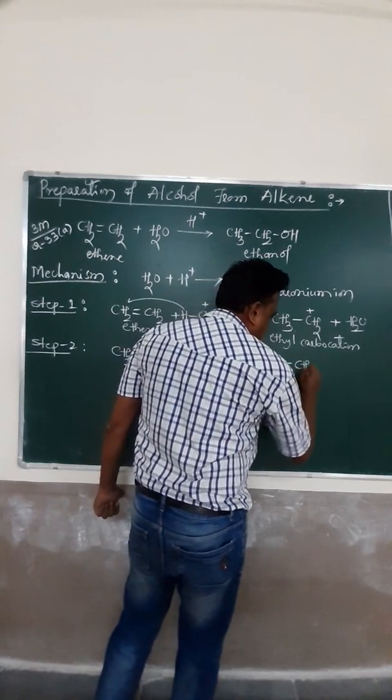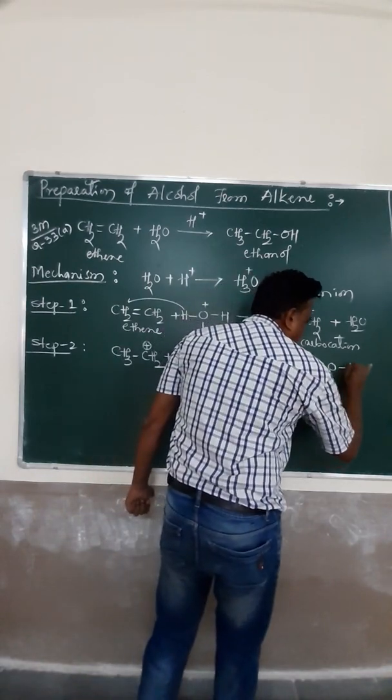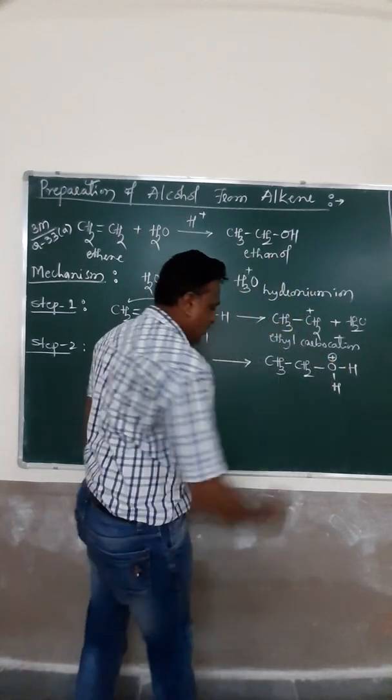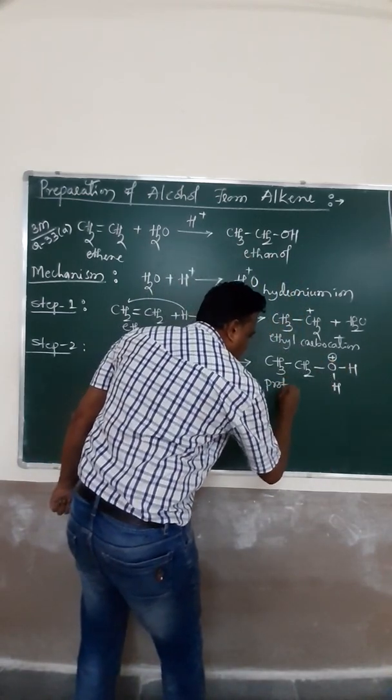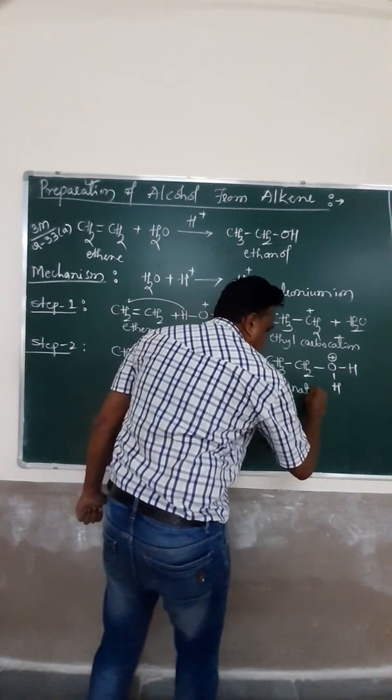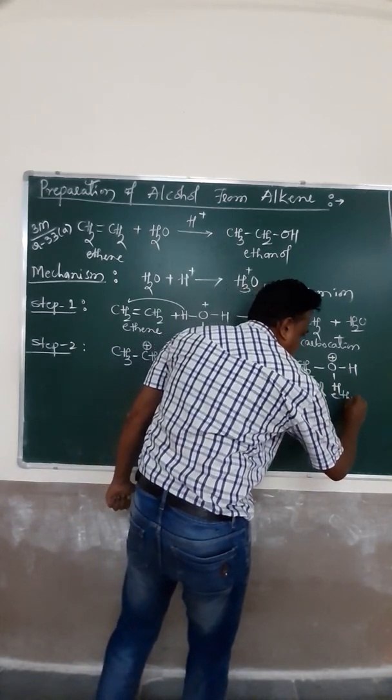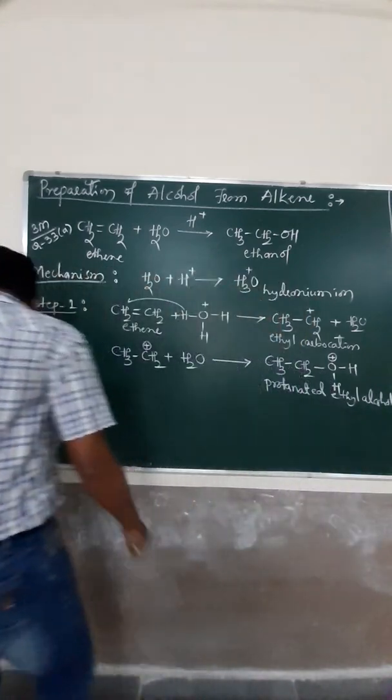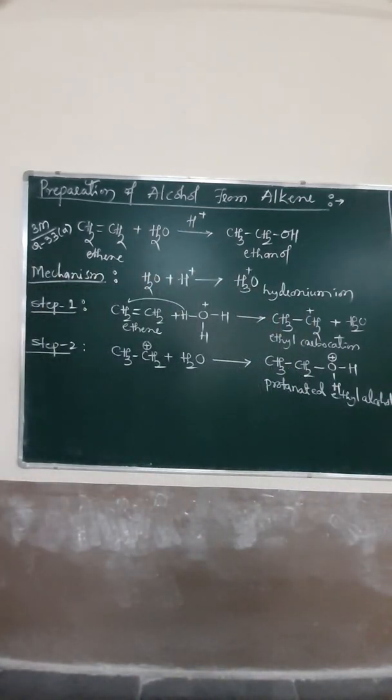It is very important. Here we have to look at CH3, CH2, O. The sign of water, HH, going to see the plus. We call it protonated ethyl alcohol, protonated ethyl alcohol.